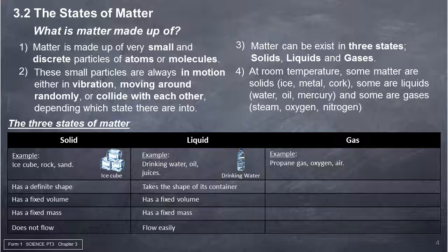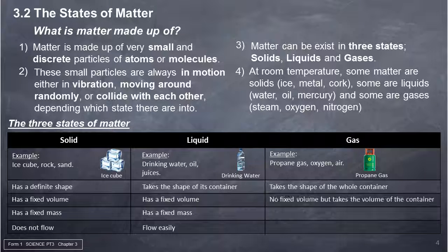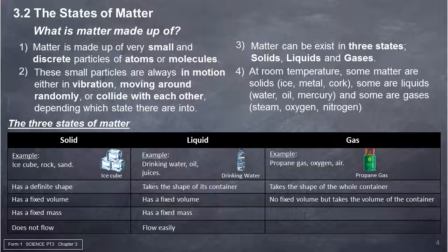Gas. Examples: Propane gas, oxygen, air. Takes the shape of the whole container. No fixed volume but takes the volume of the container. Has a fixed mass. Flows easily in all directions.